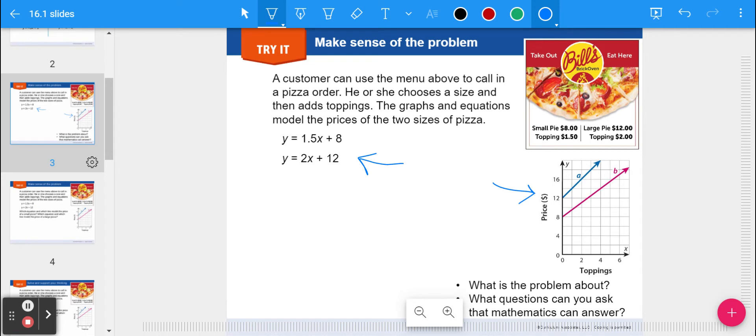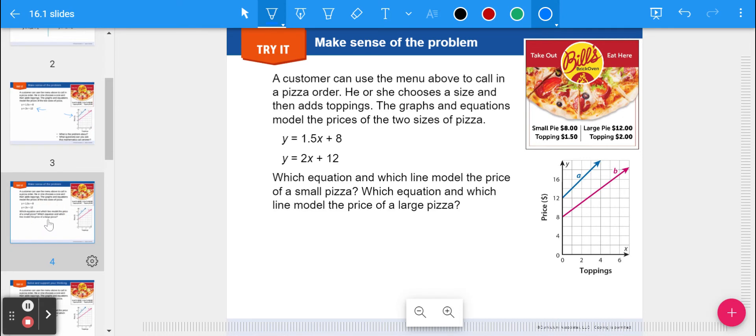What is this problem about? You might be saying it's pizza, but it's also modeling how much you pay depending on what you order. What kind of questions can you ask about it? What is the 1.5, what is the 8, what is the 2, what is the 12?